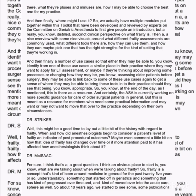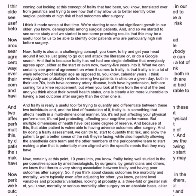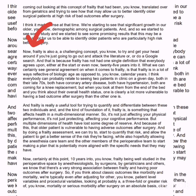Frailty is a challenging concept if you go out and attack the literature, because it has not had one single definition that everybody agrees upon — not at the start and not even now, 25 years in. What we can see general agreement on is that frailty is reflective of biological age as opposed to calendar years. Consider two patients in their late 70s — both have coronary disease, hypertension, and are coming for a knee replacement — but one is clearly more vulnerable to a bad outcome. Frailty is a useful tool for quantifying and differentiating between these two individuals.